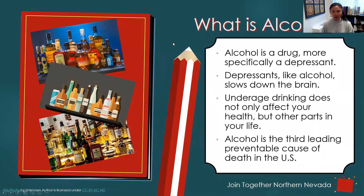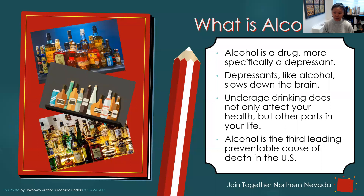So what is alcohol? We all know alcohol is a drink, but because it's a drink I think people forget that it's also a drug. Alcohol is indeed a drug — more specifically, a depressant — and depressants like alcohol slow down the brain. We're also going to go over how underage drinking affects not only your health but other parts of your life. Alcohol is the third leading preventable cause of death in the U.S.